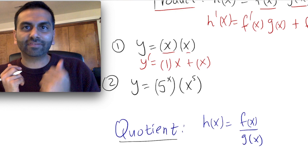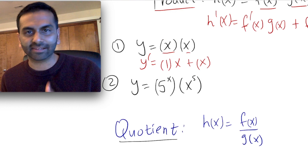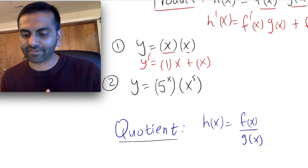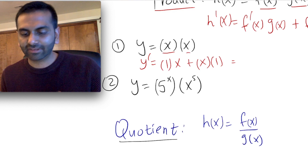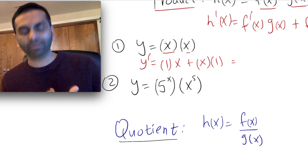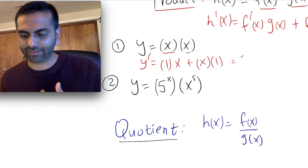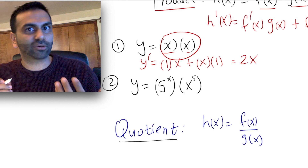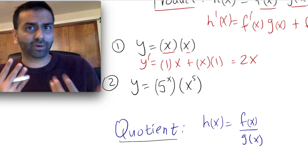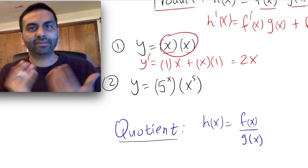A good rule of thumb is just take the derivative of the first guy first, then times the second as is, plus now the first guy as is, and the derivative of the second guy. Applying that to x times x: the derivative of the first guy is 1, times x, plus x times 1, which is x plus x, that's 2x. So the derivative is 2x, which we knew because x times x is x squared. That verifies the product rule works.